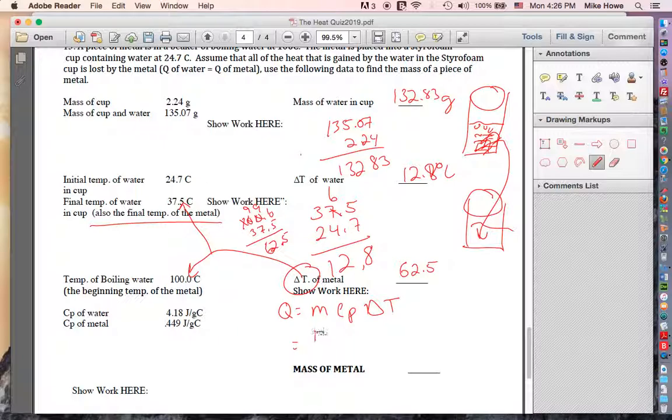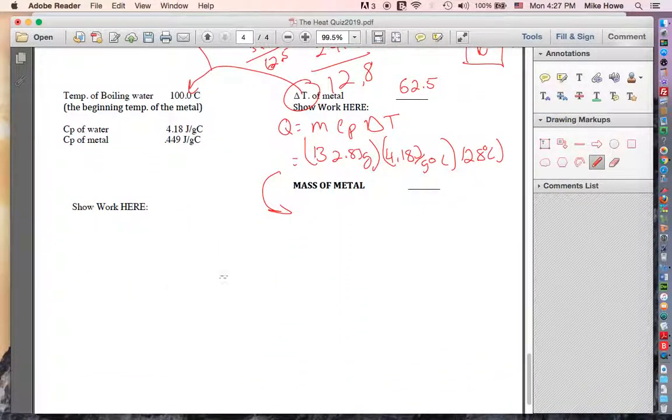So what's the mass of the water? That's the 132.83. Got to keep track of these numbers. That's not always easy. The heat capacity of water, do we know that? Yeah, it's listed right here. That's 4.18. That keeps popping up, doesn't it? And do we know the change in temperature of the water? Yes, 12.8 Celsius. So now to find Q of the water, I should have been showing the work down here. So the Q of the water is 132.83 times 4.18 times the temperature change, which was 12.8, equals 7106.94.